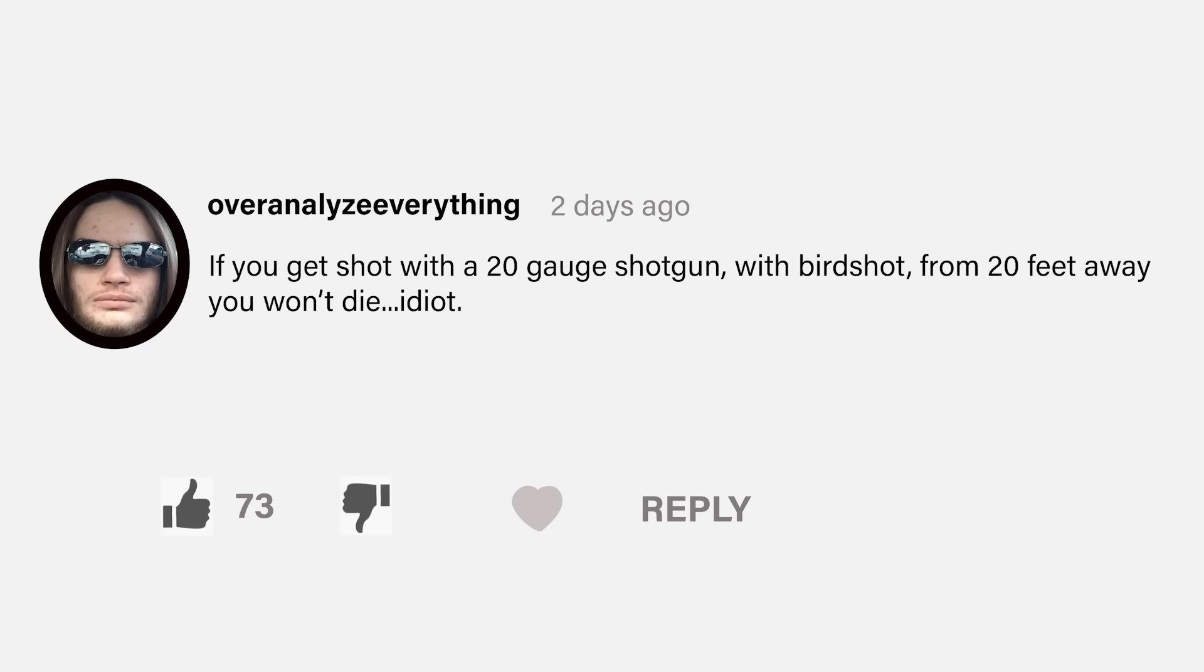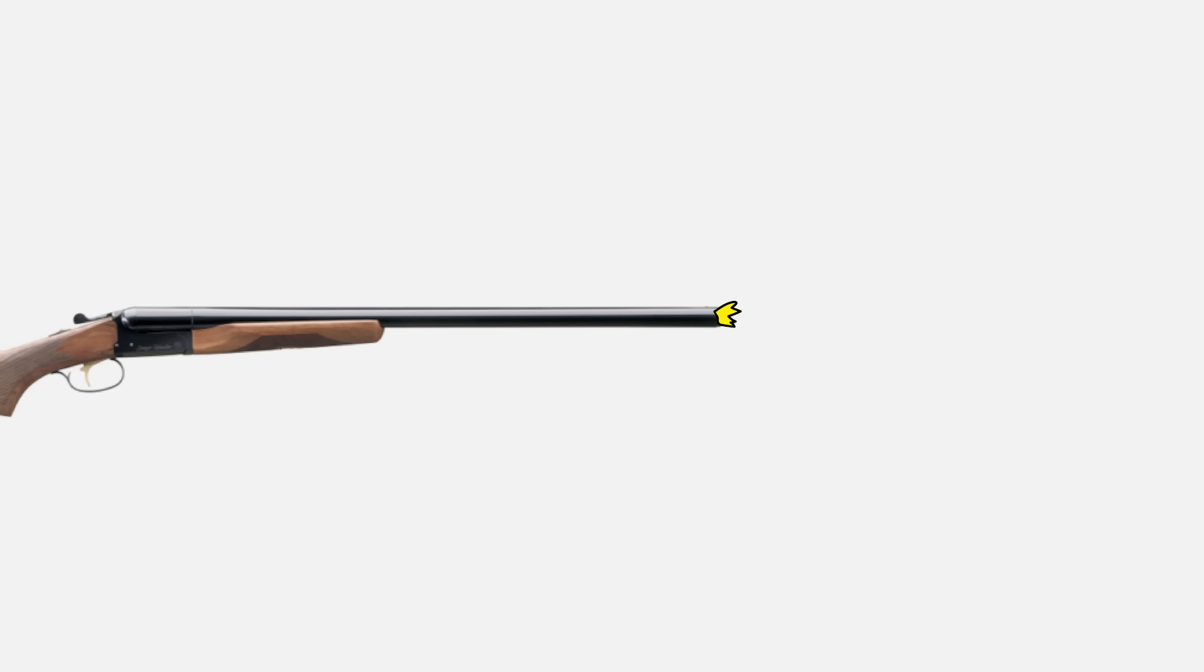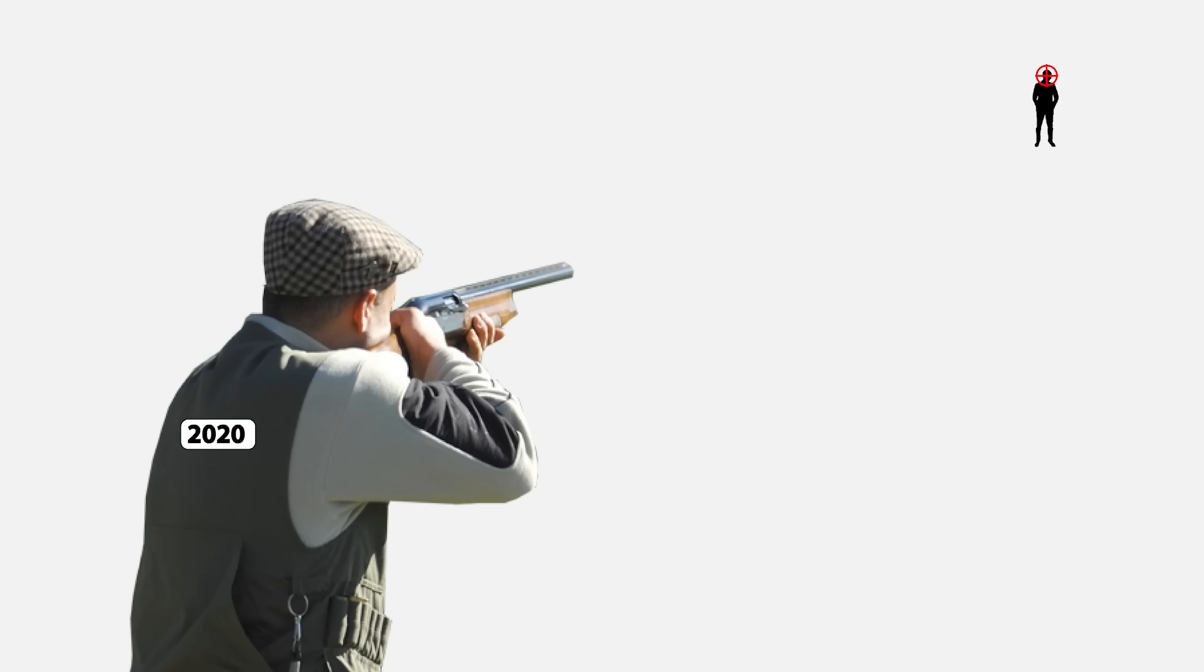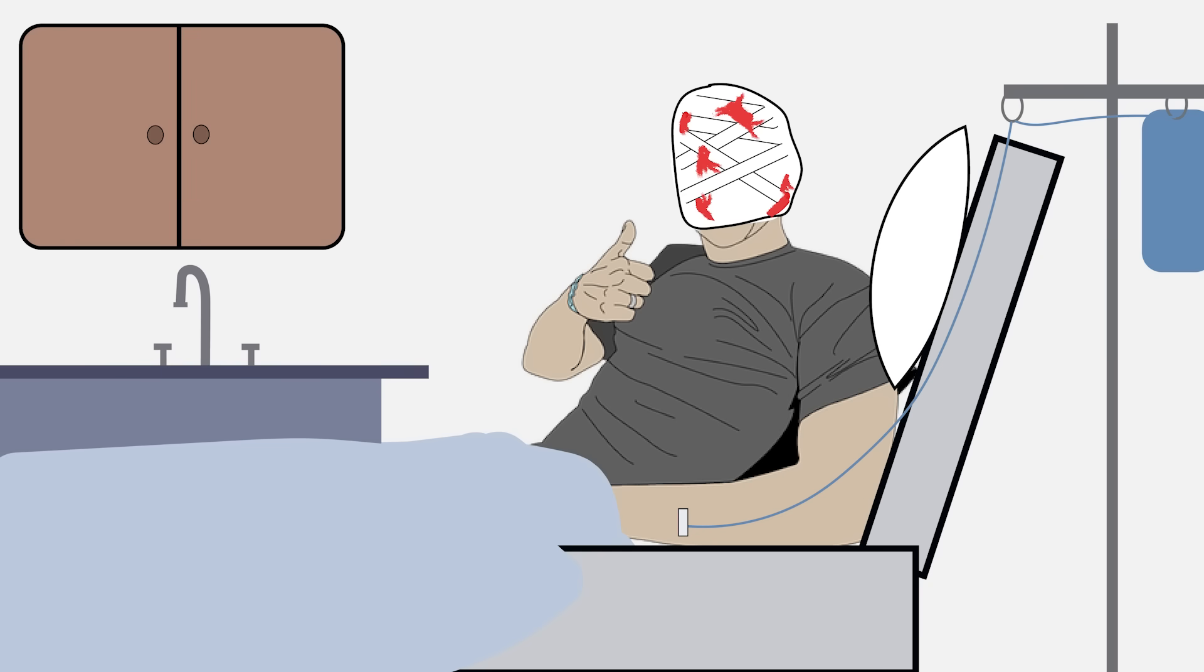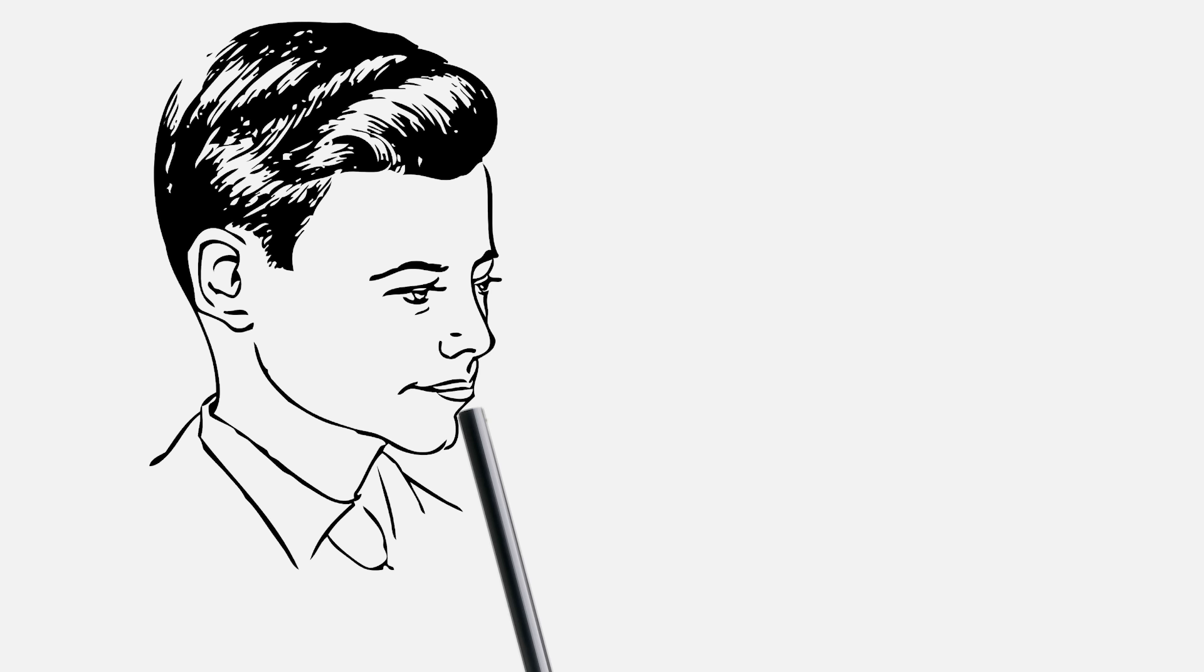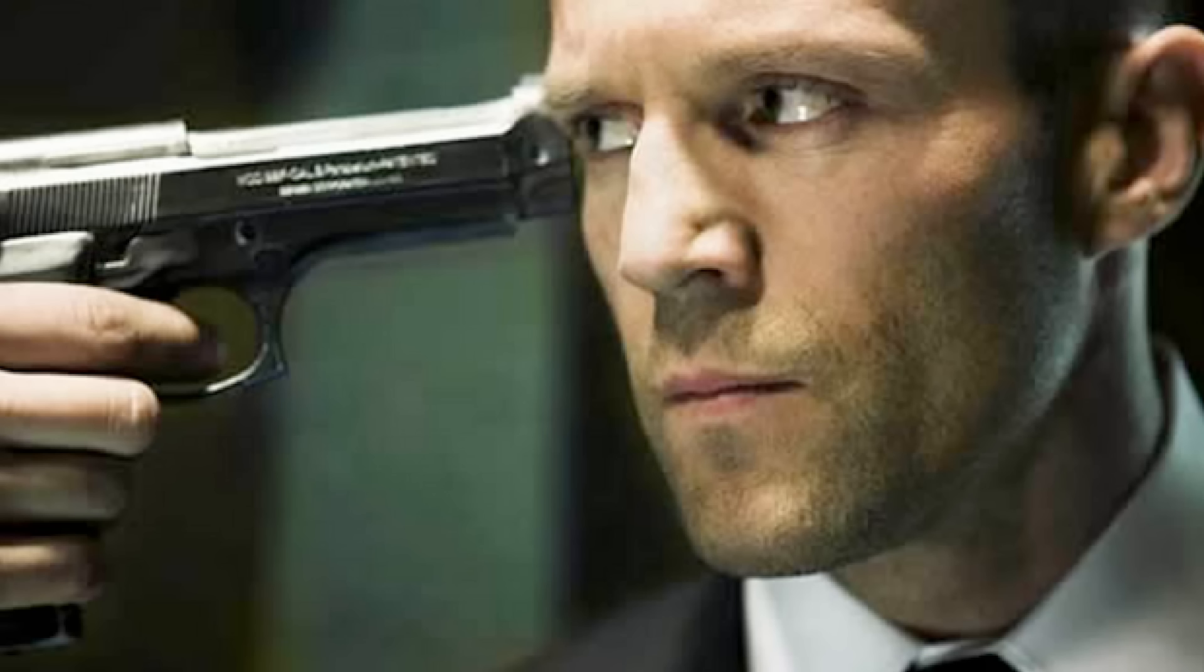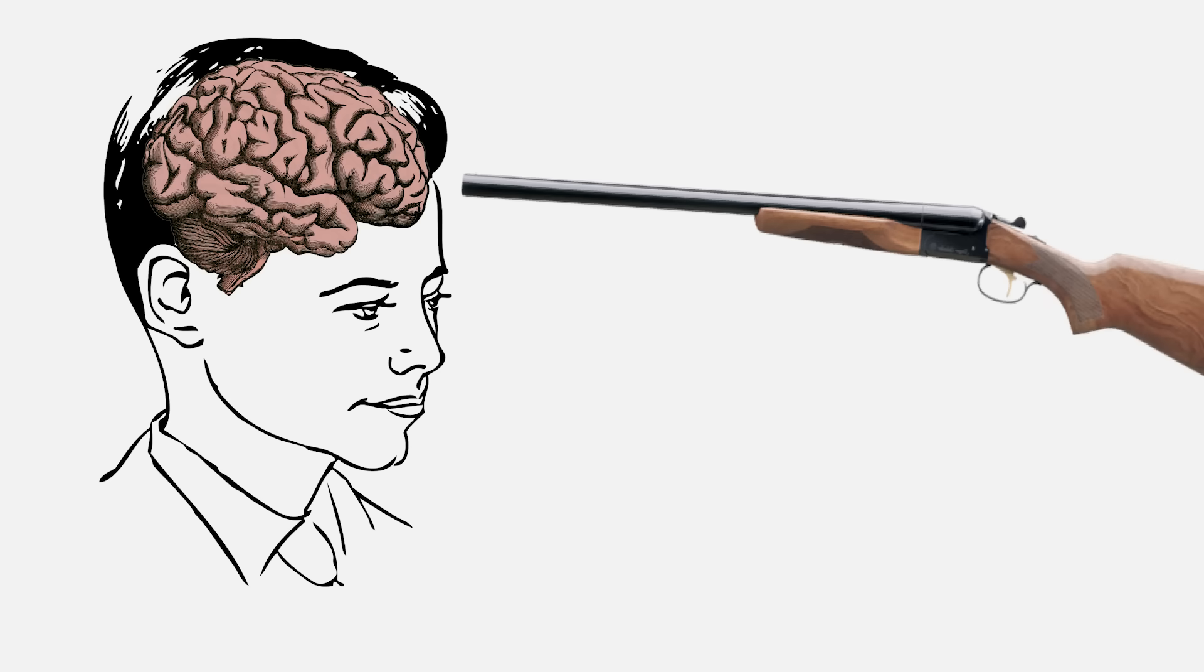I'm sure there'll be some comments along the lines of, well, if you get shot with a 20-gauge shotgun with birdshot from 20 feet away, you won't die, idiot. Okay, let's be real here. We're talking lethal distance with lethal rounds, either buckshot or a slug, within relatively close range, like 5 or 6 feet, not 100 yards away. Yes, some people do live after a self-inflicted shotgun wound to the head, but that's because they didn't hit their brain. Usually, they end up taking off their face or their jaw.